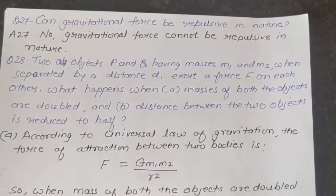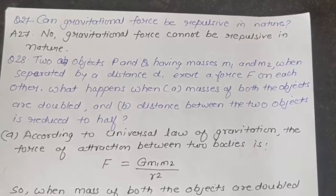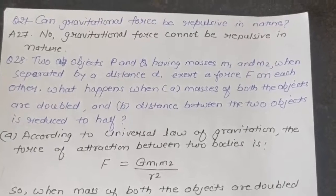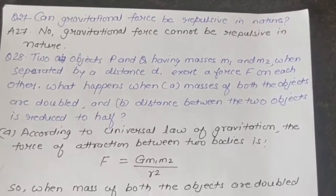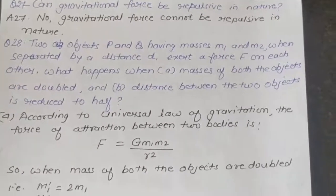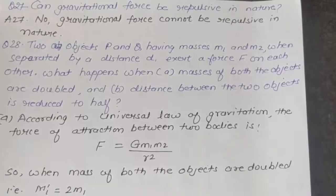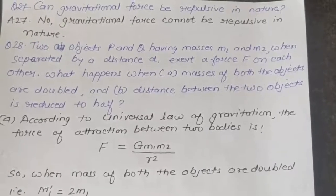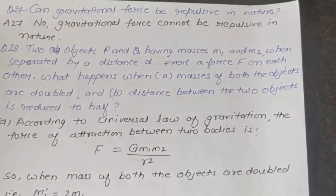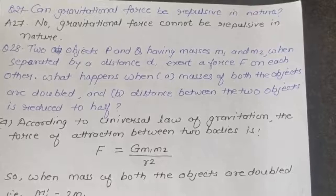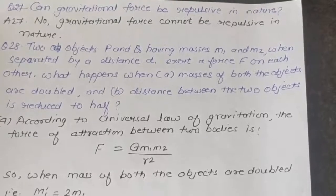Question 27: Can gravitational force be repulsive in nature? Answer: No, gravitational force cannot be repulsive in nature. Question 28: Two objects P and Q having masses M1 and M2, when separated by distance R, exert a force F on each other. What happens when the masses of both objects are doubled and the distance is reduced to half?